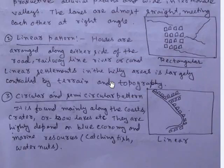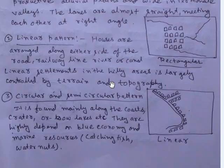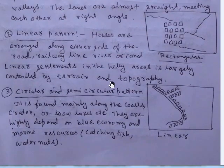The linear pattern develops on either side of a road, railway line, river, or canal. In hill areas, linear settlements are largely controlled by terrain and topography.